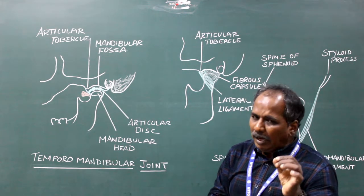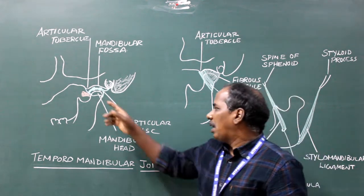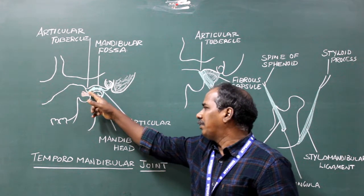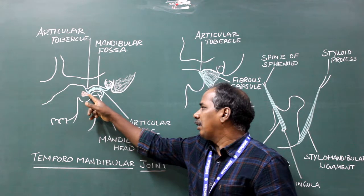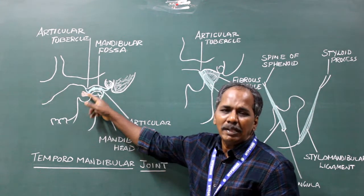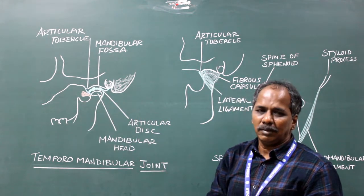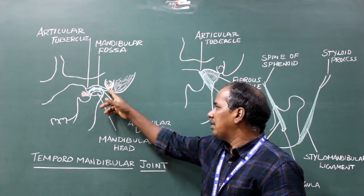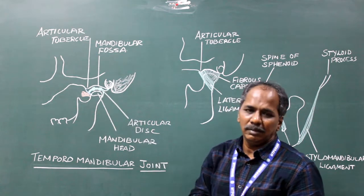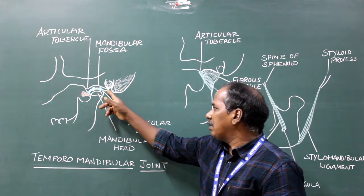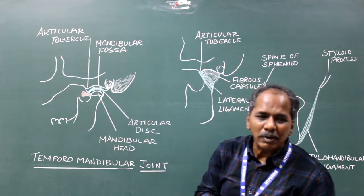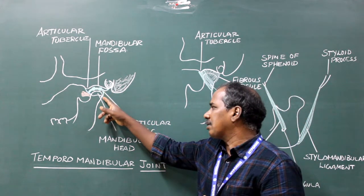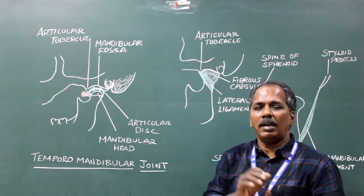The articular disc is attached anteriorly to the capsule of the temporomandibular joint and the tendon of lateral pterygoid. Posteriorly, it splits into two bands, upper and lower. The upper lamina is attached to the squamotympanic fissure. The lower lamina is attached to the posterior surface of the condyle.